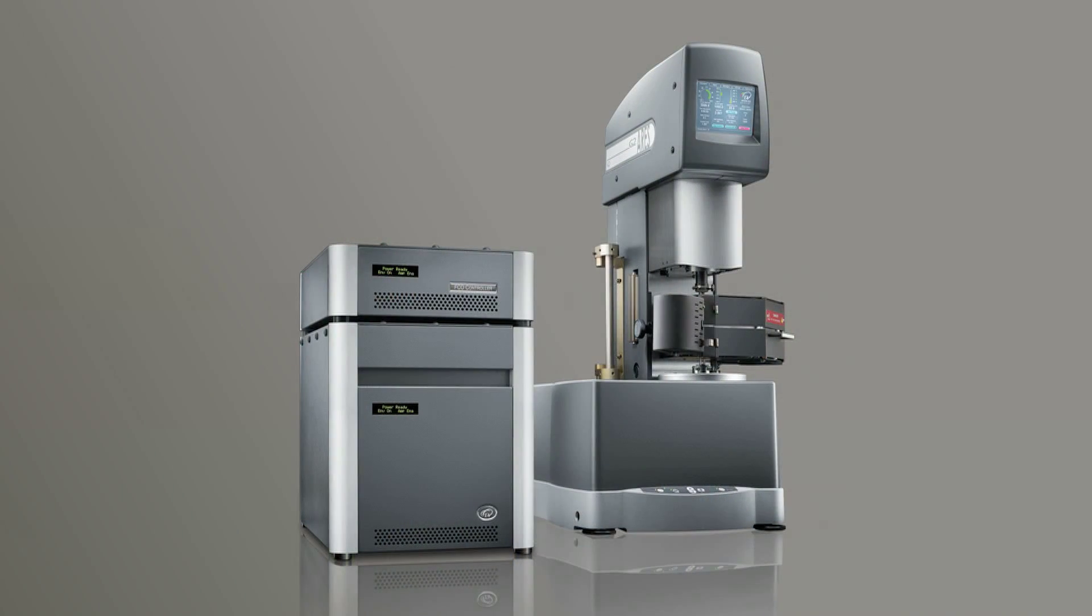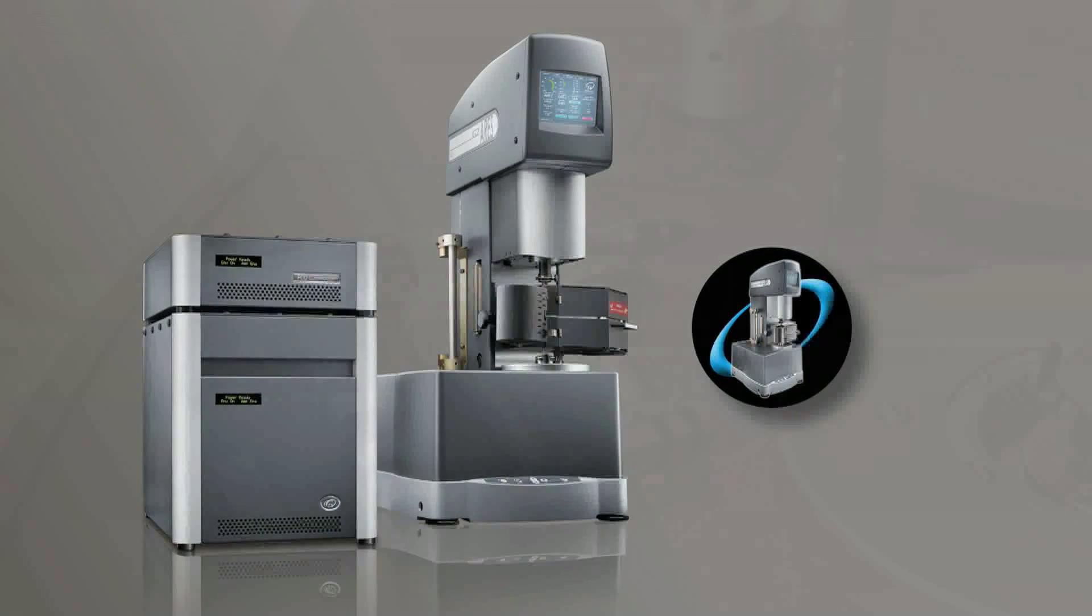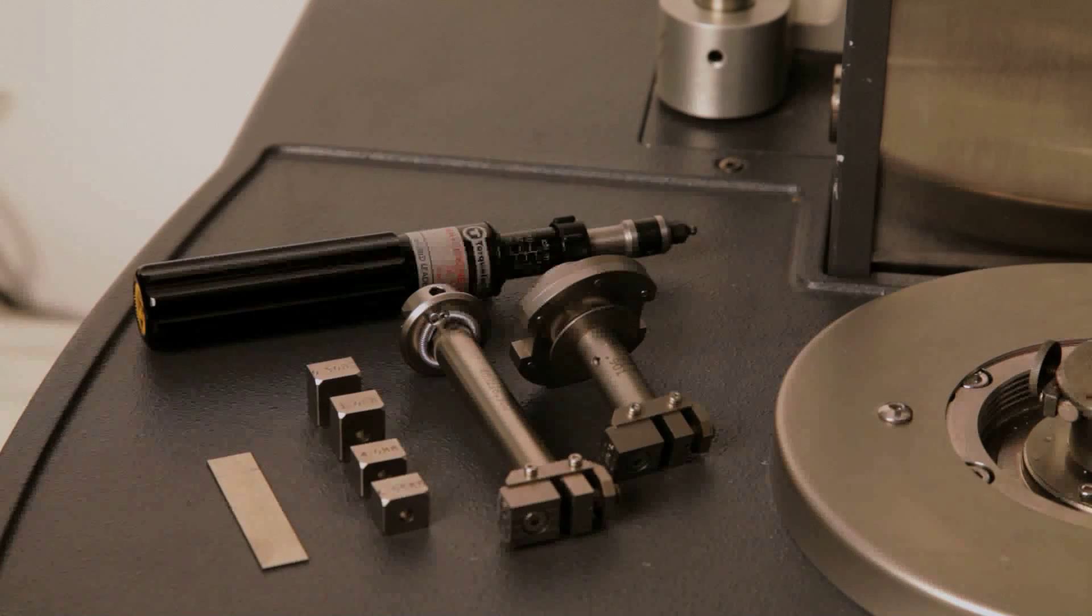First, ensure that the ARIES G2 with the force convection oven is fully enabled, communicating with the TRIO software, and you have a complete rectangular torsion kit.